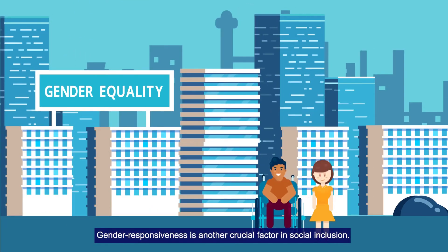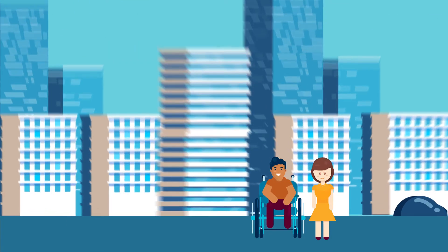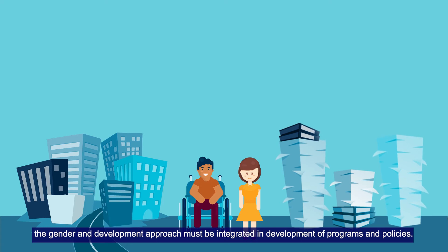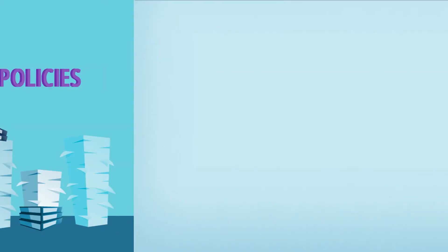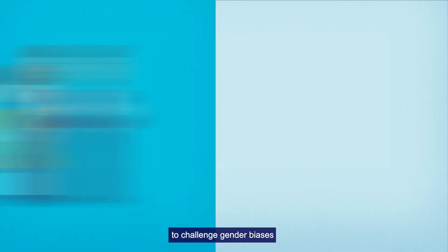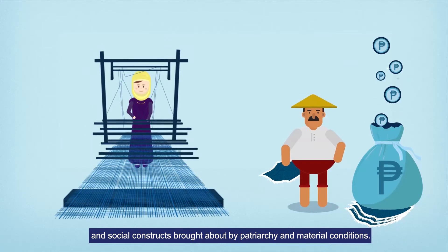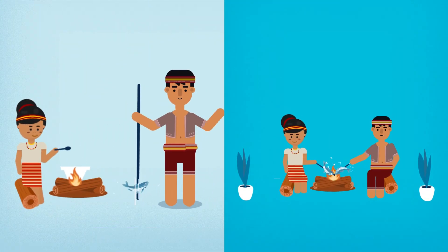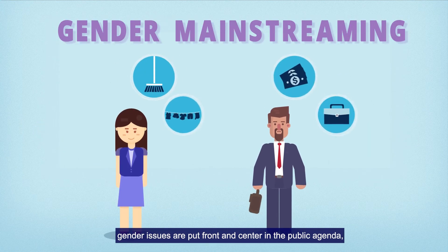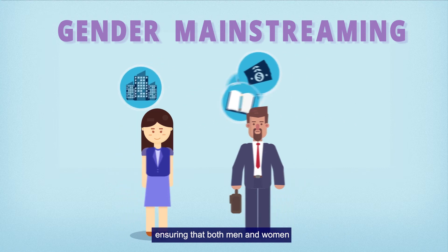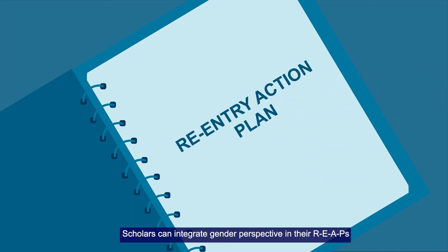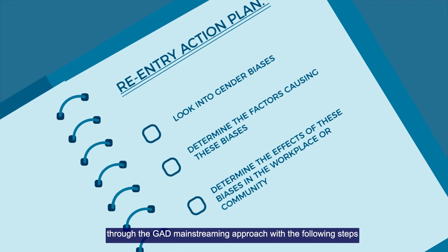Gender responsiveness is another crucial factor in social inclusion. To achieve genuine social progress, the Gender and Development approach must be integrated in the development of programs and policies. The GED approach stresses the need to challenge gender biases and social constructs brought about by patriarchy and material conditions. Through gender mainstreaming, gender issues are put front and center in the public agenda, ensuring that both men and women act as agents of development. Scholars can integrate a gender perspective in their REAPs through the GED mainstreaming approach.